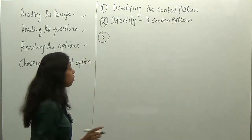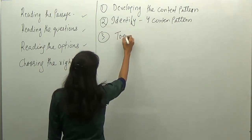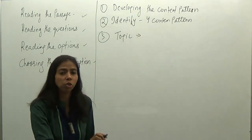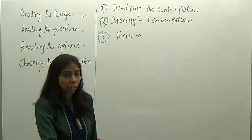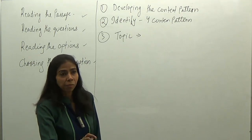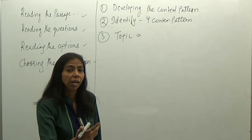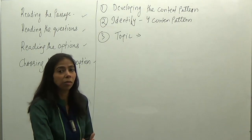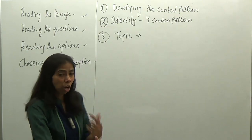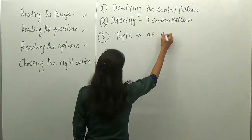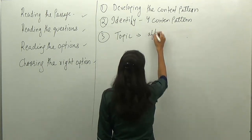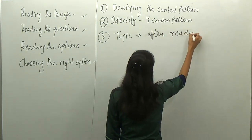Third, always remember: while building up the content pattern, you should identify the topic at the end. Although the author usually starts with the topic — this happens in 90 percent of cases — sometimes the author doesn't start with the topic. The best way to identify the topic is to look for the high-count word, the word that is being repeated many times. This is only possible if you go through the passage completely, so identify the topic after reading the full passage.